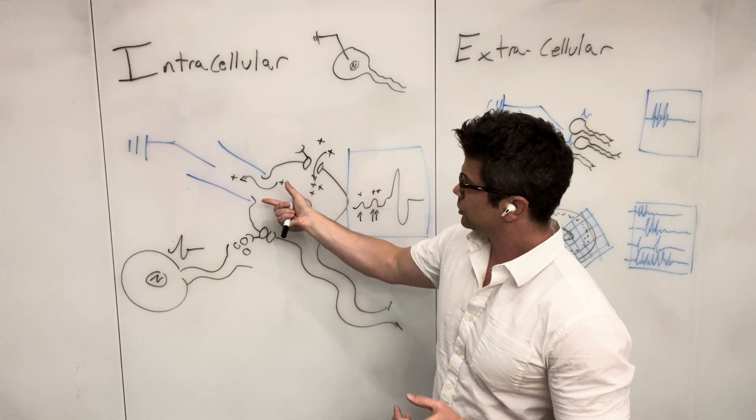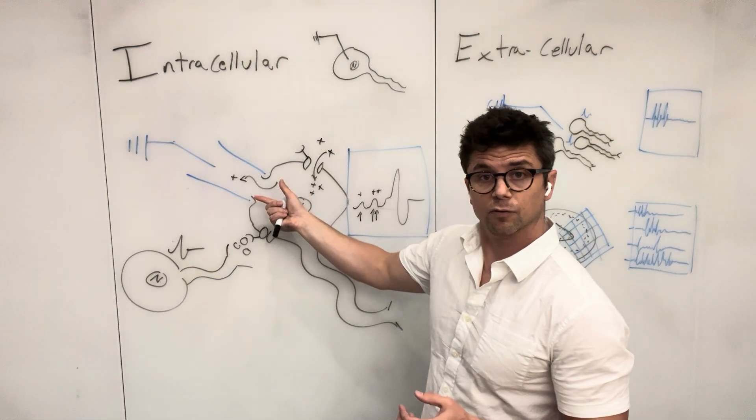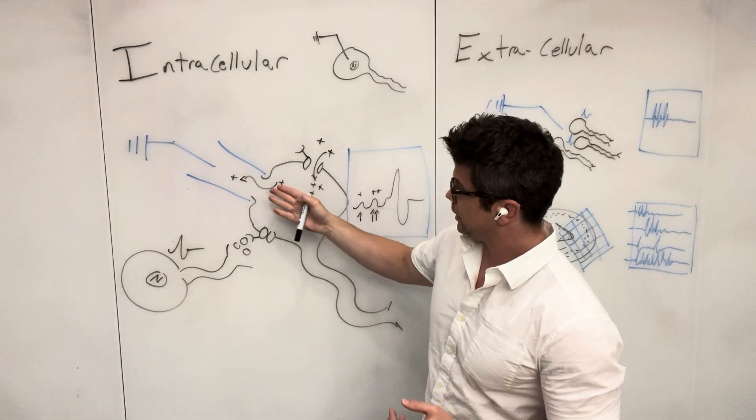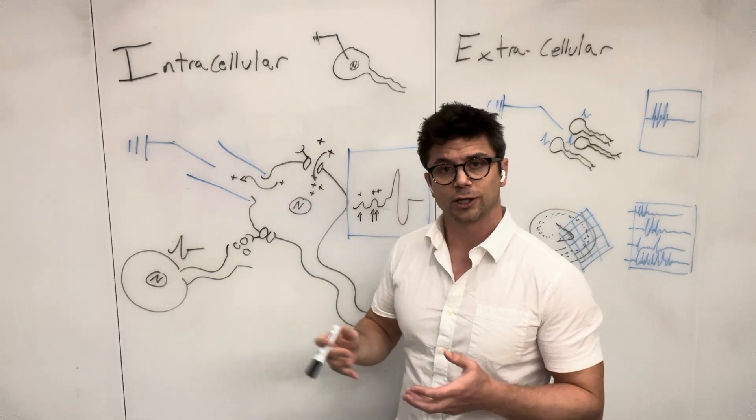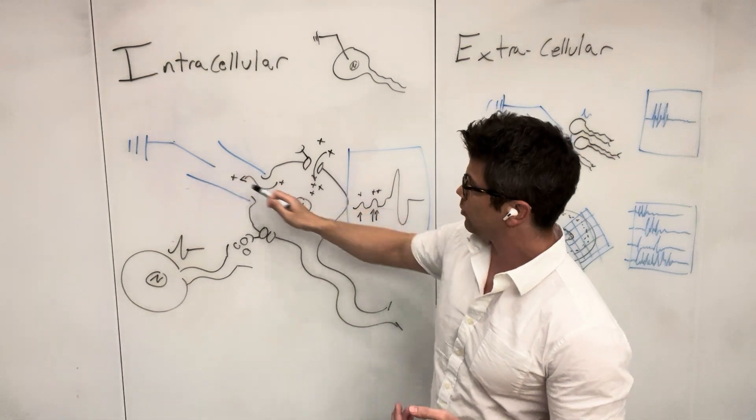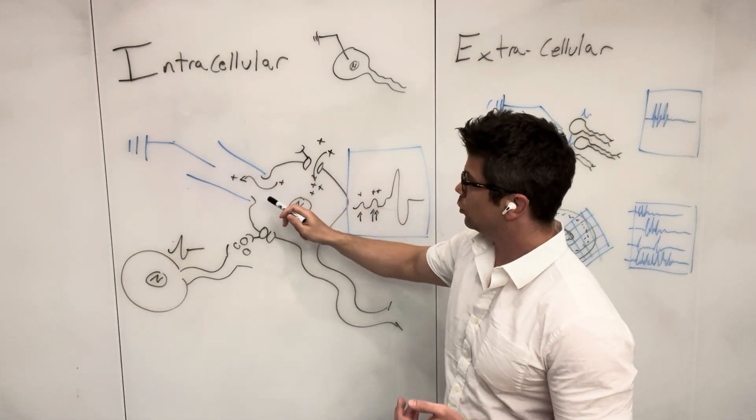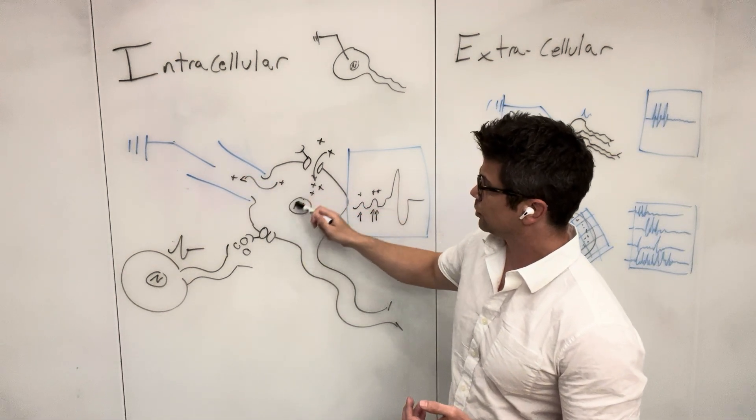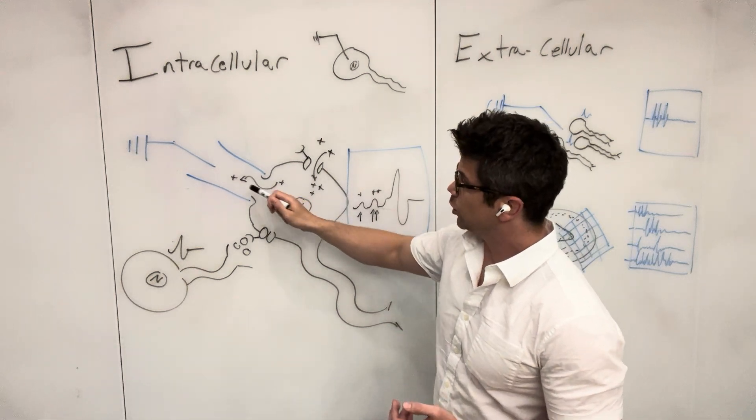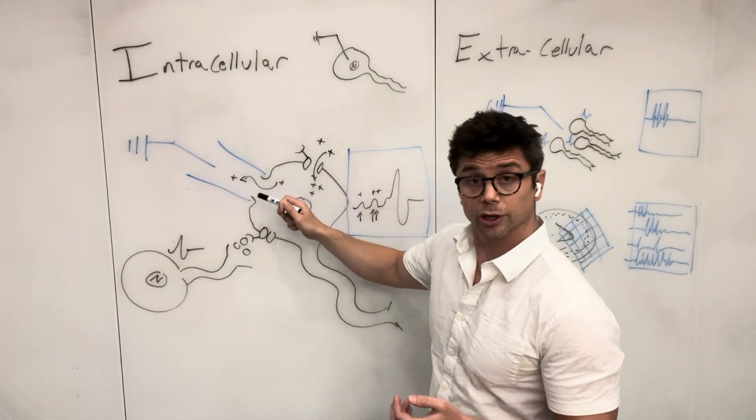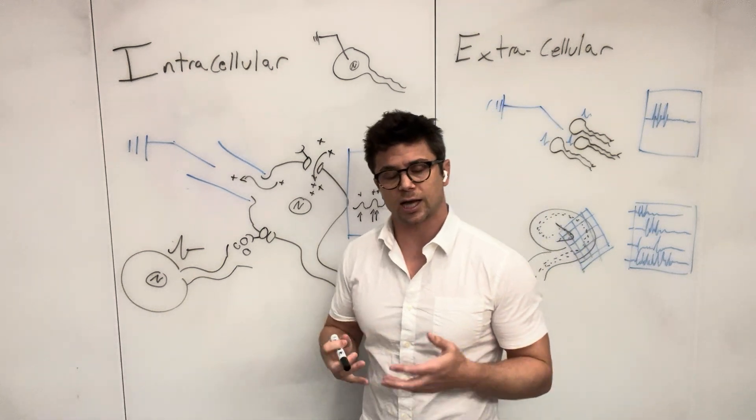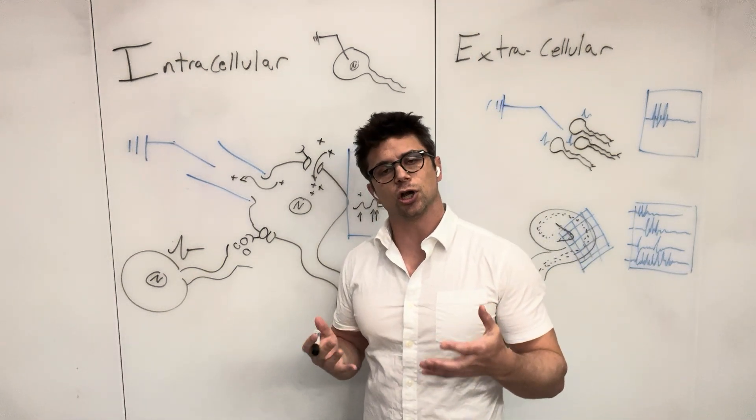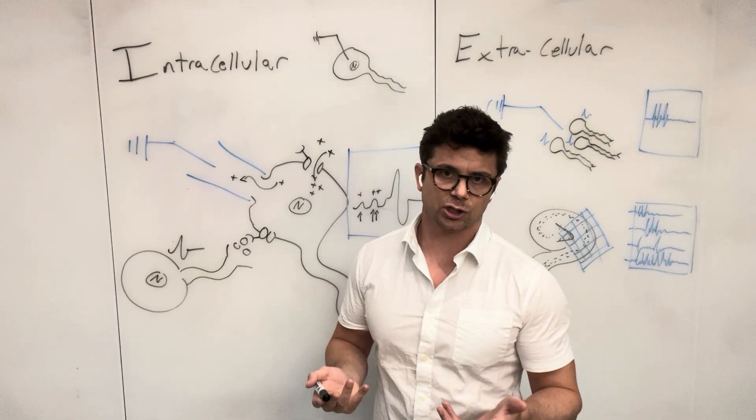You have an electrode with a wider bore tip. You attach it to the surface of the neuron and then apply a little bit of suction and actually rupture a small circle in the membrane. So there's now a continuous flow of the intracellular milieu with your recording pipette.